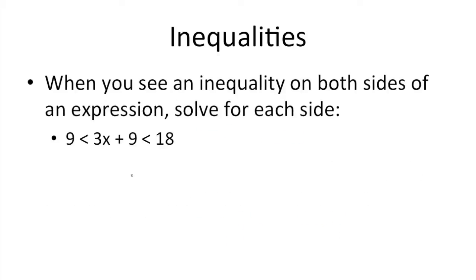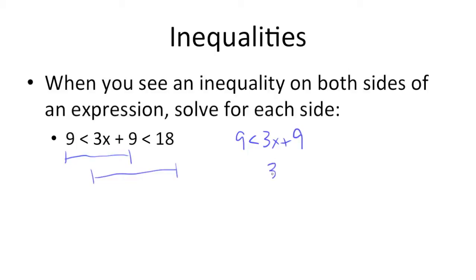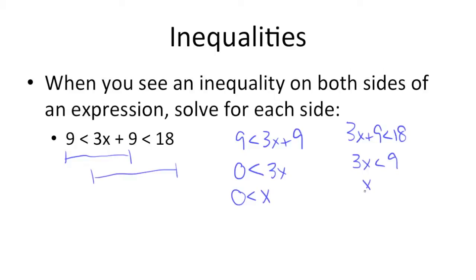So sometimes you'll encounter inequalities that are on both sides of an expression. For example, we have 9 is less than 3x plus 9, which is less than 18. All you need to do to solve this is break it down into two inequalities: 9 is less than 3x plus 9, and 3x plus 9 is less than 18. For the first part, subtract 9 from both sides and we get x is greater than 0. For the second, subtract 9 from both sides, then divide by 3, and we get x is less than 3. Putting that together, we get 0 is less than x, which is less than 3.